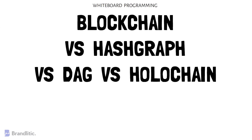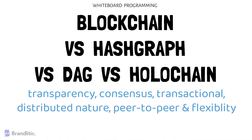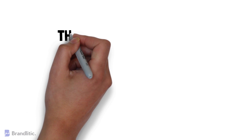To summarize, a comparison of DLTs — blockchain versus hashgraph versus DAG versus holochain — brings out interesting aspects of each platform. Speaking overall, all DLTs share common aspects: transparency, consensus, transactional and distributed nature, peer-to-peer interaction, and flexibility. However, huge differences emerge in their consensus mechanisms and data structures.